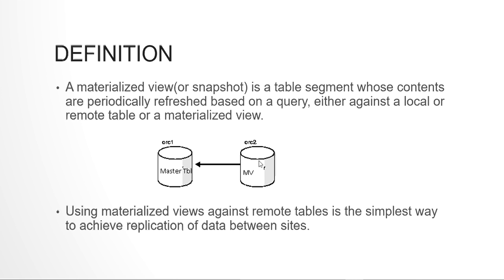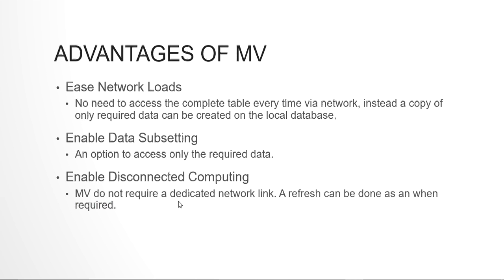This is the basic concept of materialized view. Using a materialized view against a remote table is the simplest way to achieve replication of data between two sites. It is not strictly necessary that master tables are on a remote database — they can also be in the same database in a different schema. The first advantage is it eases network load. There is no need to access the complete data table every time via network. Instead, a copy of only the required data — fetched by the select statement of the materialized view — is created in our local database.